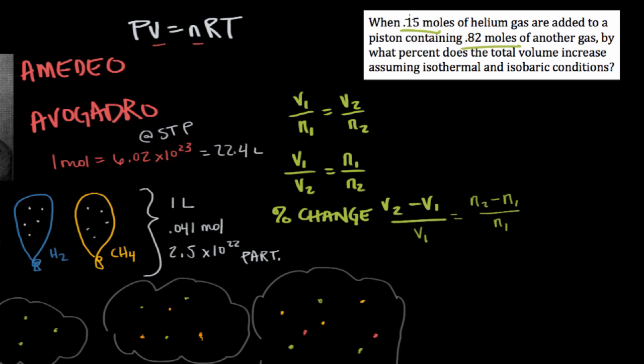To find the final moles, because it just says that 0.15 moles are added to 0.82, we'll need to add those together. So 0.82 plus 0.15 is equal to 0.97. So 0.97 is our final number of moles, that would be our N2.